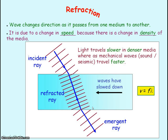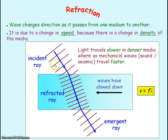When light travels from glass into air, the frequency again remains the same. But the wave speed will increase because air is a less dense medium. So as velocity has increased and frequency remains the same, the wavelength must increase. The spacing between the wave fronts increases and returns to the same spacing as for the incident wave.